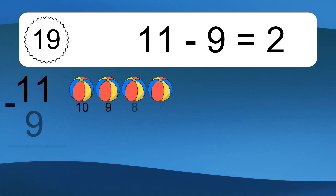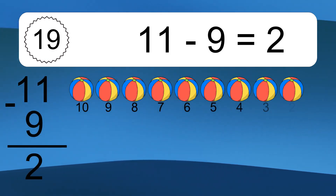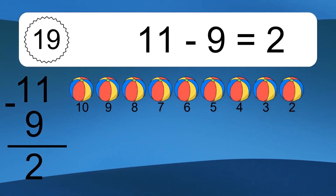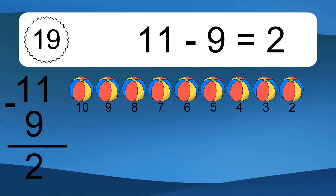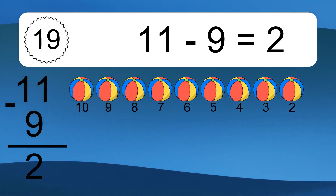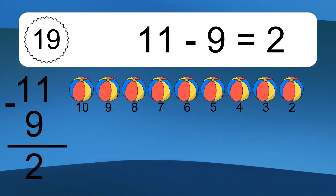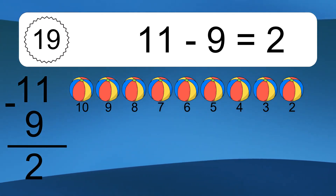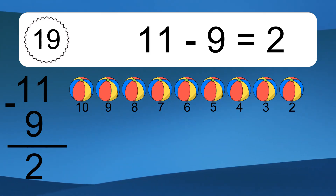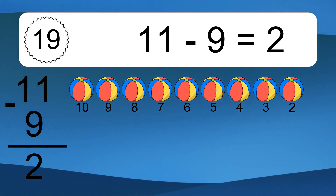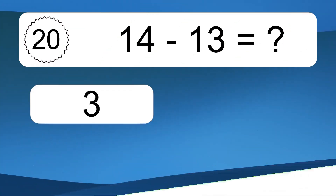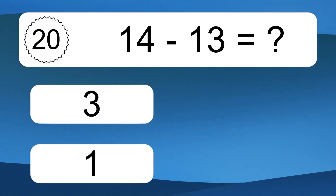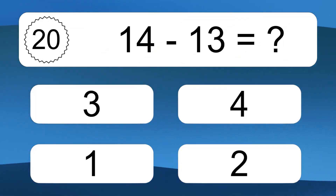11 minus 9 equals 2. Let's count it: 10, 9, 8, 7, 6, 5, 4, 3, 2. 14 minus 13 equals what?